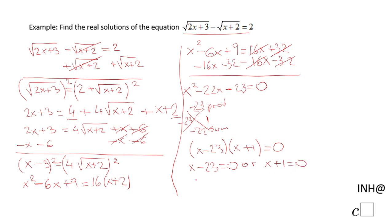The first factor equals zero gives us x equals 23. The second one gives us x equals negative 1.